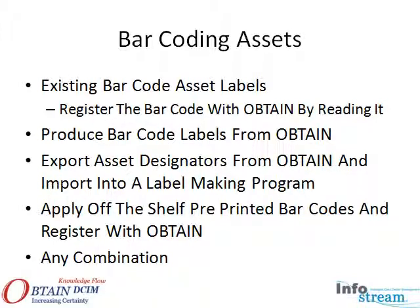In some cases, it is desirable to extract the information from Obtain and import it into a quality barcode label device. Another approach is to simply apply off-the-shelf sequential barcode labels to devices. These are small and work well on 1U servers. Many applications, as in our use case, require a combination of methods.